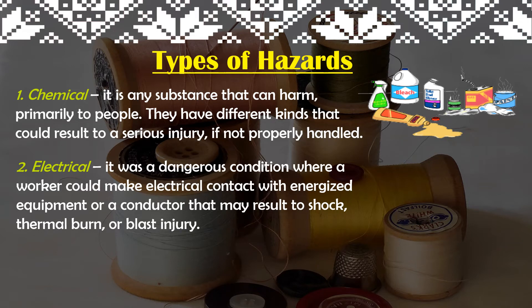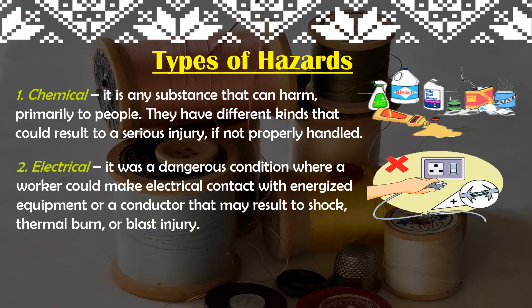Next is the electrical hazard. It is a dangerous condition where a worker could make electrical contact with energized equipment or a conductor, which may result in shock, thermal burn, or blast injury. That is why when we plug in our sewing machine, we must make sure our hands are dry. If our hands are wet, there is a possibility of getting grounded or electrocuted. That is the second type of hazard — electrical.